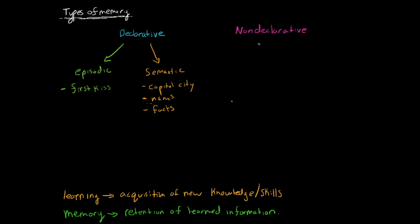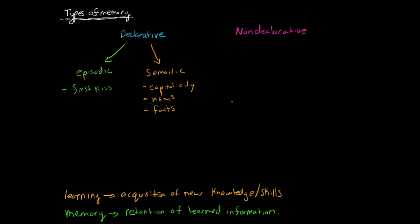Then you have non-declarative memories, which fall into several categories. The first category would be procedural memory. Procedural memory is skills and habits, and it's usually associated with the striatum in your brain. This would be like playing the piano, riding a bike.